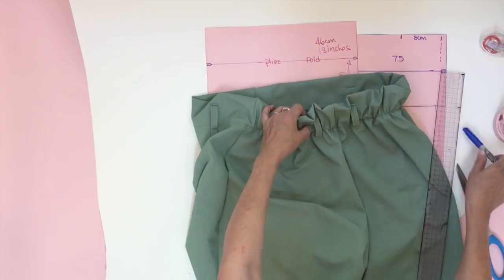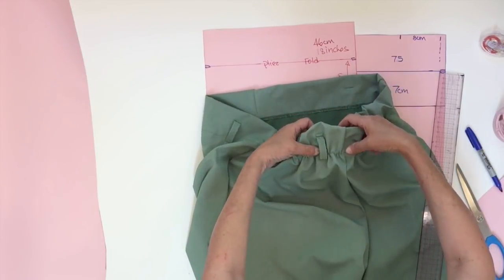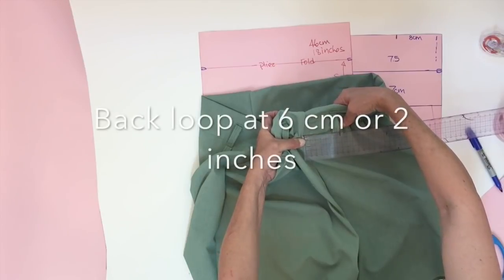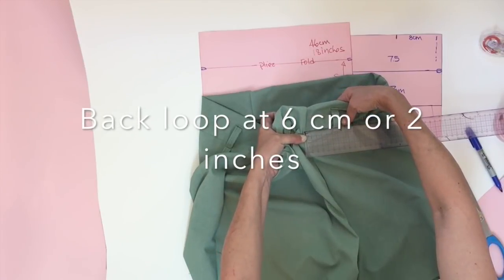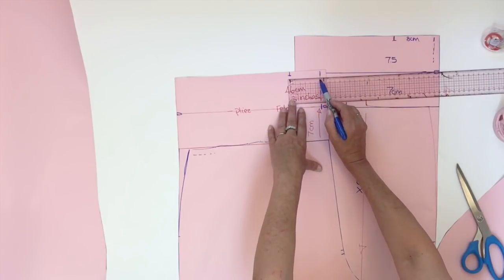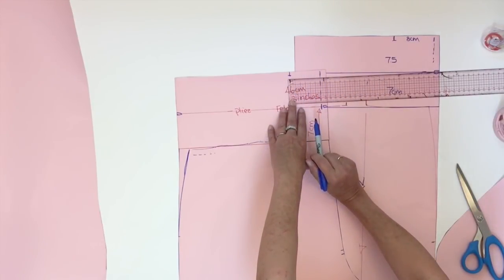Now for the back loop, I placed them closer to my center back. And if I measure over here, they're at six centimeters from the center back. Here again, I'm going to start from my seam line to measure my six centimeters.